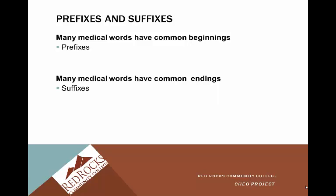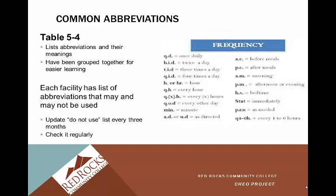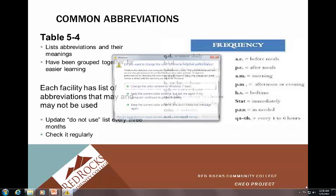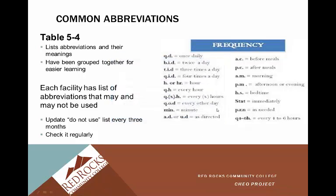Those are probably going to be on your quiz. Common abbreviations are in Table 5-4 in your book. Abbreviations change frequently, and you'll see the ones shown here are frequently used. You'll see them especially in whatever environment you're working in. Making sure that you really understand these is very important. Abbreviations and their meanings are grouped together in Table 5-4 for easier learning. A lot of this is just going to be practice and exposure, just like medical terminology.